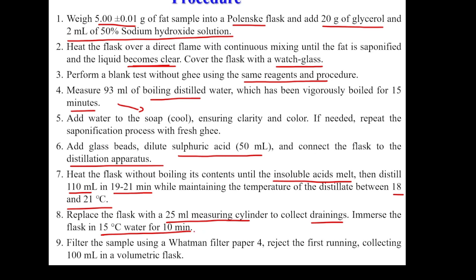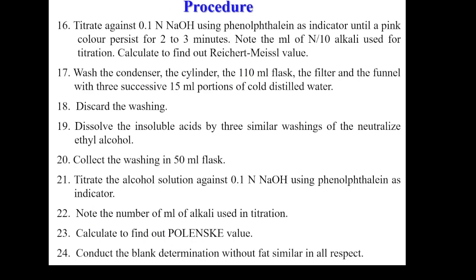Cover the flask with its lid and cool at 15 degrees Celsius for 10 minutes to ensure short-chain fatty acids are condensed into solution. Then filter the sample using Whatman number 4 filter paper, rejecting the first draining, and collect in a 100 ml volumetric flask. Titrate against 0.1 normal NaOH using phenolphthalein indicator until a pink color persists for 2 to 3 minutes. Note the ml of alkali used to calculate the RM value.